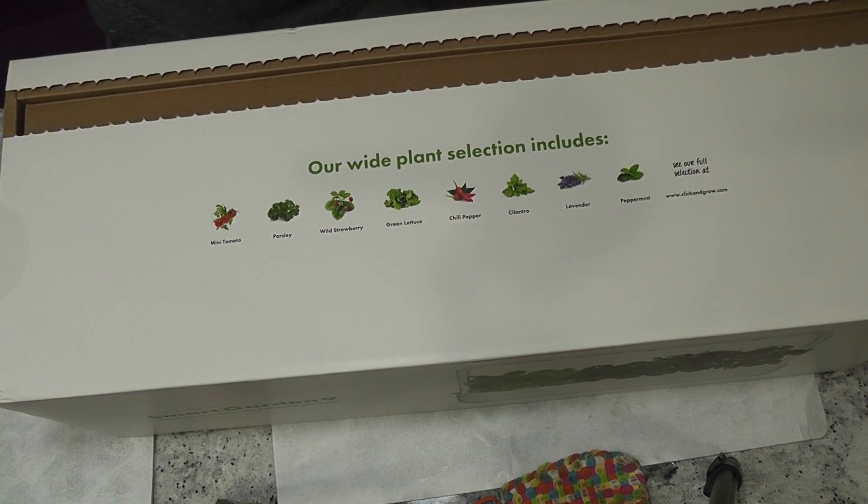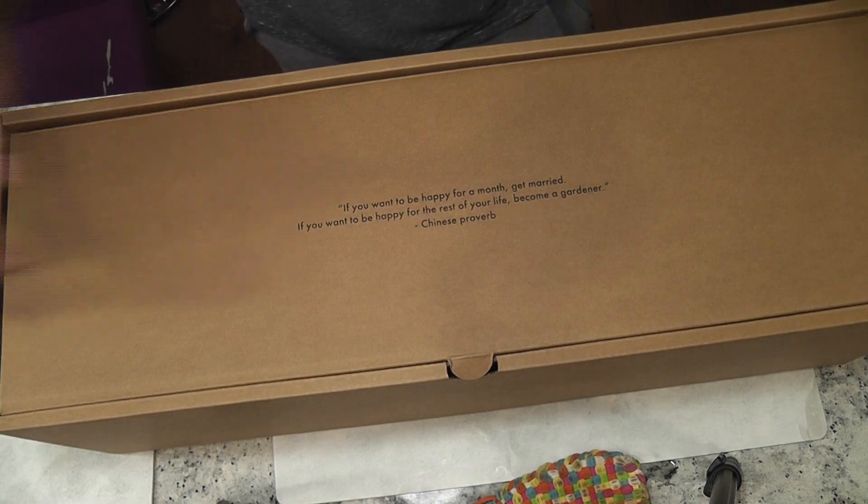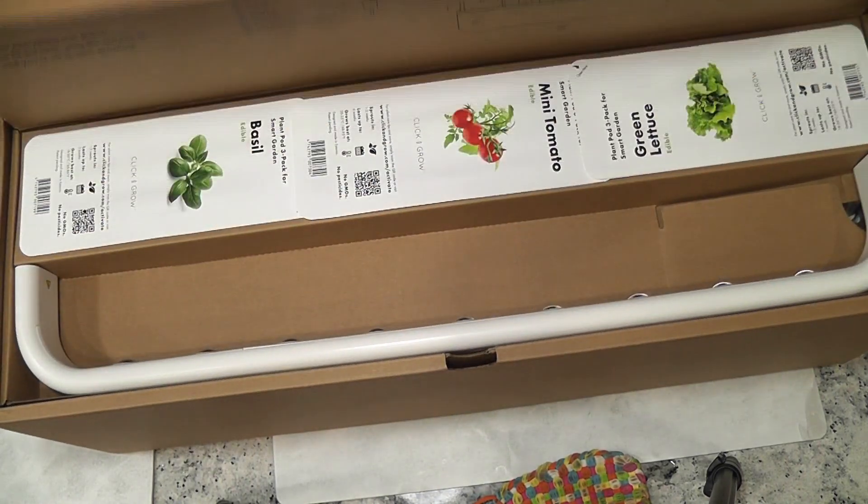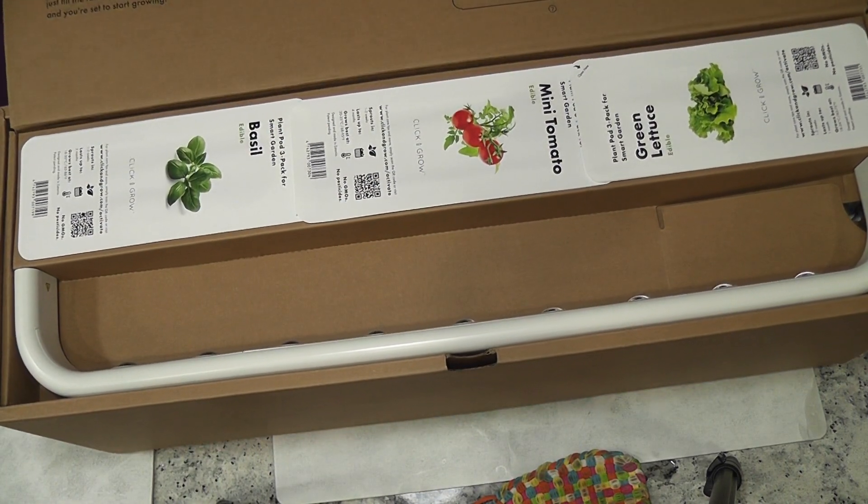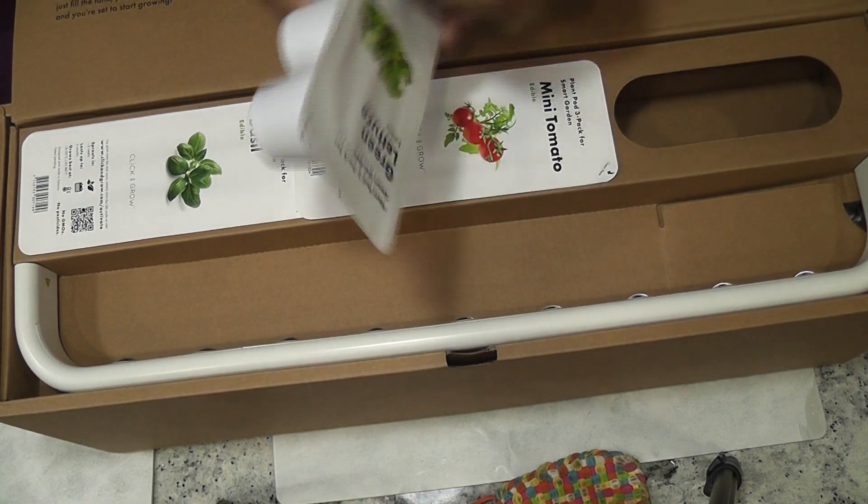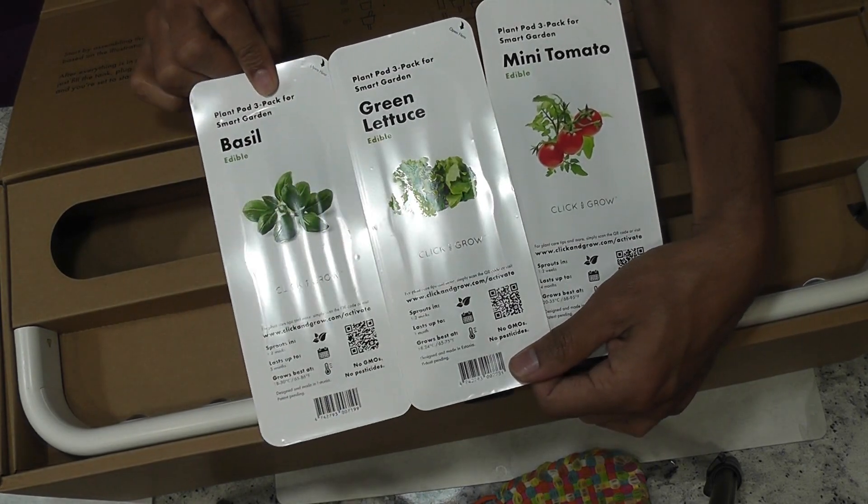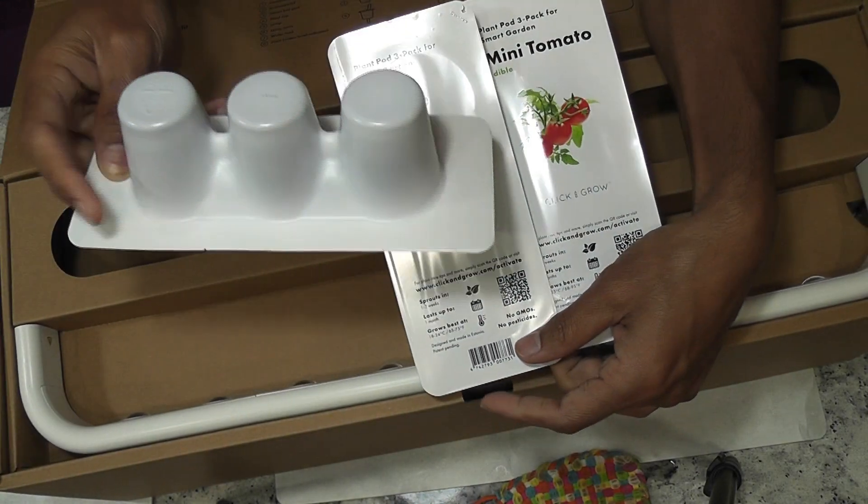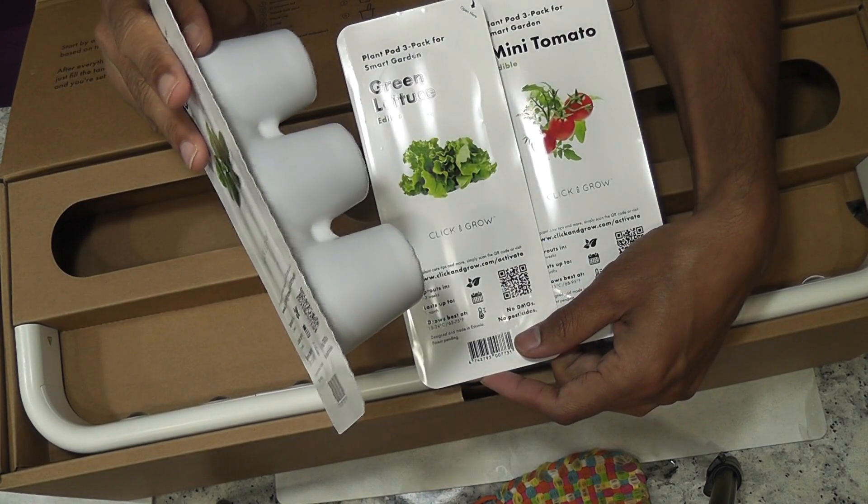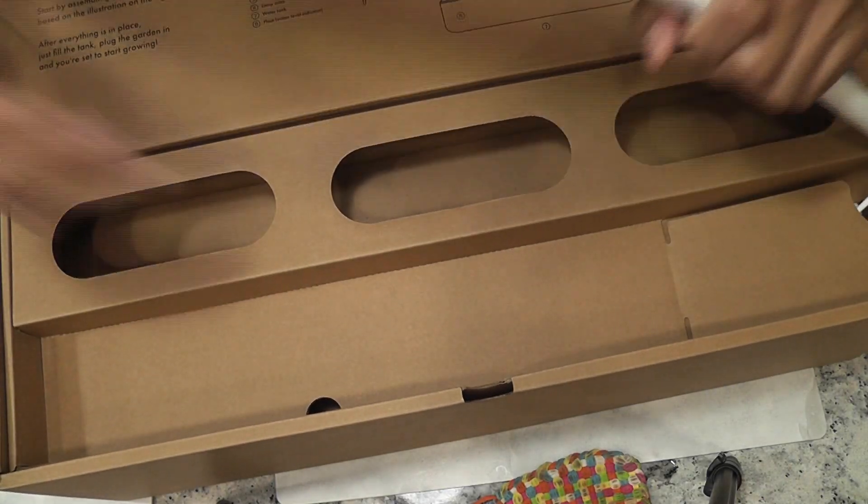It came with three packs of pre-seeded pods: basically three plant varieties - basil, lettuce, and tomatoes - with three pods in each variety, total nine pods. Next thing is the light panel with power adapter.